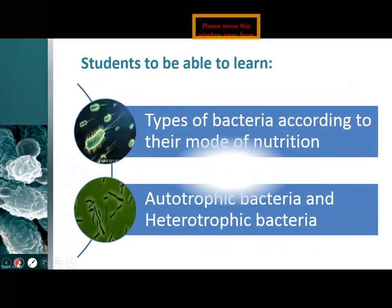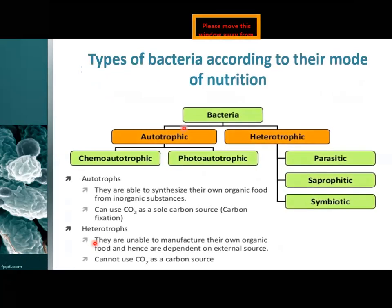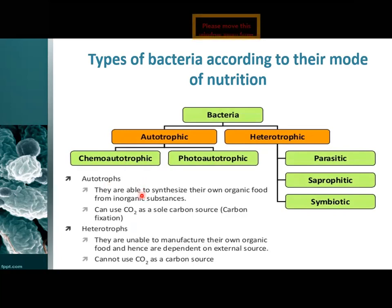Now today we will be learning the types of bacteria according to their mode of nutrition: autotrophic bacteria and heterotrophic bacteria. They are of two types. Auto means on their own, so autotrophic bacteria are of two types: chemo-autotrophic and photo-autotrophic. They are able to synthesize their own organic food from inorganic substances.